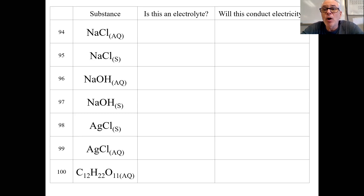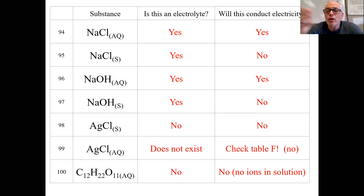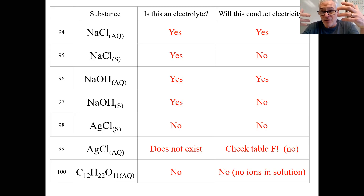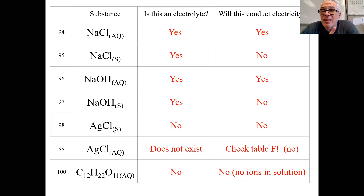An electrolyte used to be a solution that conducted electricity because it had ions. But now the state says that something like sodium chloride solid, because it would become an electrolyte in water — because it would ionize in water — technically is an electrolyte, but it can't conduct electricity because it's not loose ions; they're locked into a solid grid. Let's look at these answers. Sodium chloride aqueous is an electrolyte because it's an ionic compound dissolved in water, which means it ionizes into ions, and if there's sufficient ions, it will conduct electricity. Sodium chloride solid technically is an electrolyte because it would turn into loose mobile ions in water — but will sodium chloride solid conduct electricity? No, because the ions are locked into a solid grid.